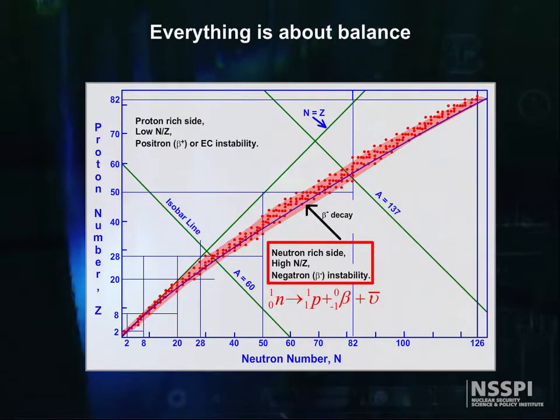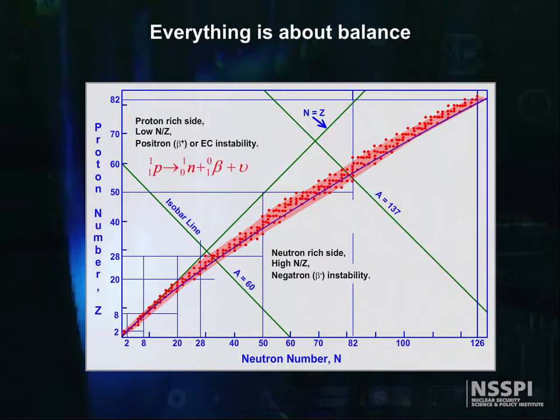Too high a ratio of neutrons to protons, and a neutron is turned into a proton and an electron. Again, beta decay. Too high a ratio of protons to neutrons, and a proton is turned into a neutron and an anti-electron, positron decay.